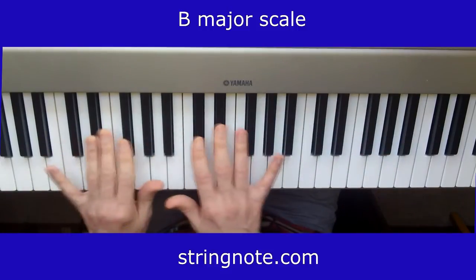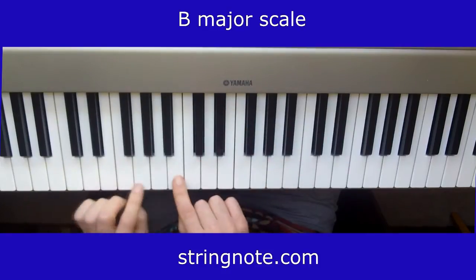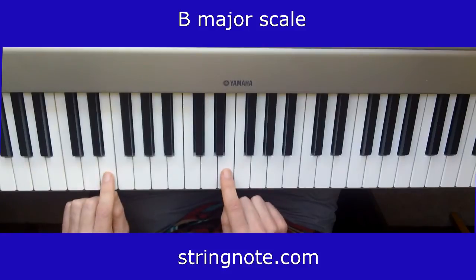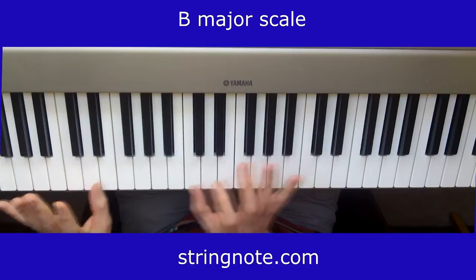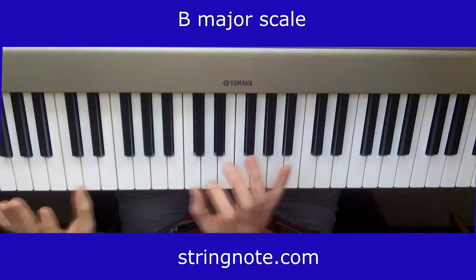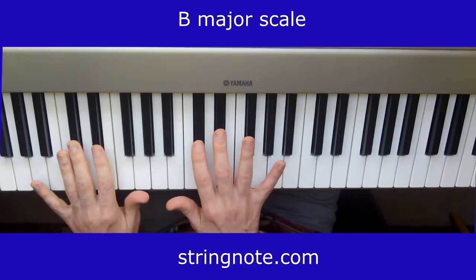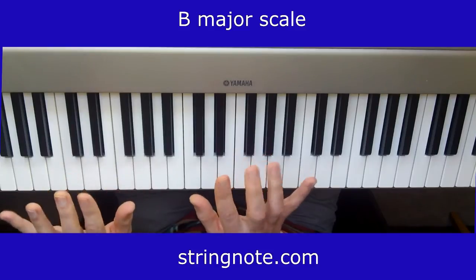This is not going to be enough to do the scale because we need a couple of white keys, which are going to be B and E. We want to play these notes with the thumb and these black keys with finger one, two.